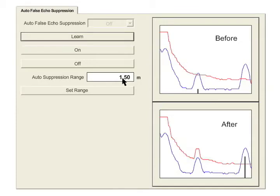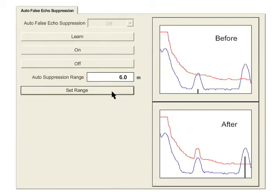In our example, the material echo is at 6.5 m, so we will enter 6 m into the range field. We then click on the Set Range button and then the Learn button to turn on Auto-False Echo Suppression.